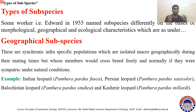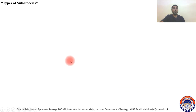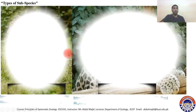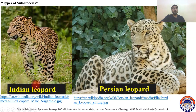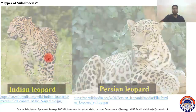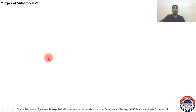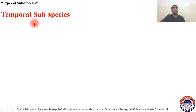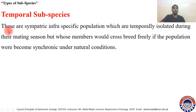For example, this is the Indian leopard and this is the Persian leopard. These are subspecies of leopards — geographical subspecies isolated from each other, but capable of interbreeding if brought together.